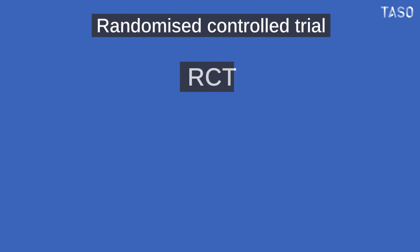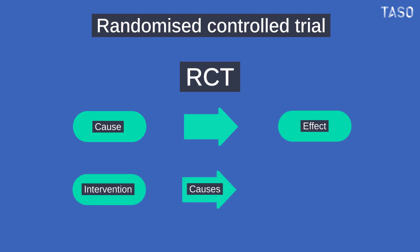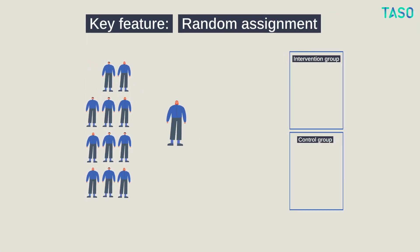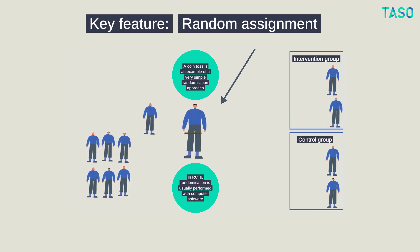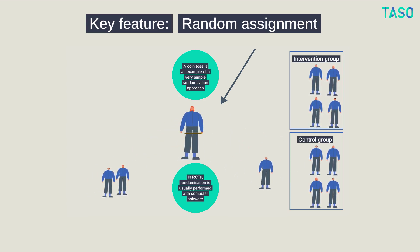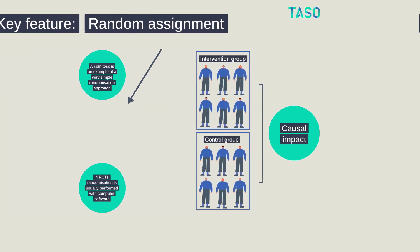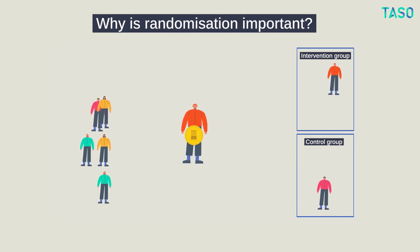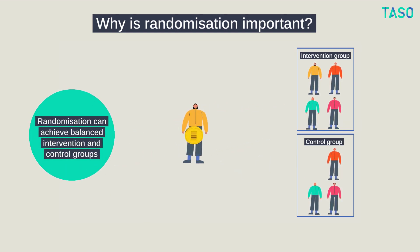A Randomised Controlled Trial, or RCT, is a robust method of evaluating whether there is a direct cause and effect relationship between an intervention and an outcome. In simple RCTs, participants are randomly assigned to an intervention group or to a control group. The intervention group is offered the intervention; the control group is usually not. Comparing outcomes between these groups reveals the intervention's impact. Random assignment ensures that participant characteristics are evenly balanced between the intervention and control groups, minimising the chance that differences between groups have influenced the outcome and isolating the impact of the intervention.